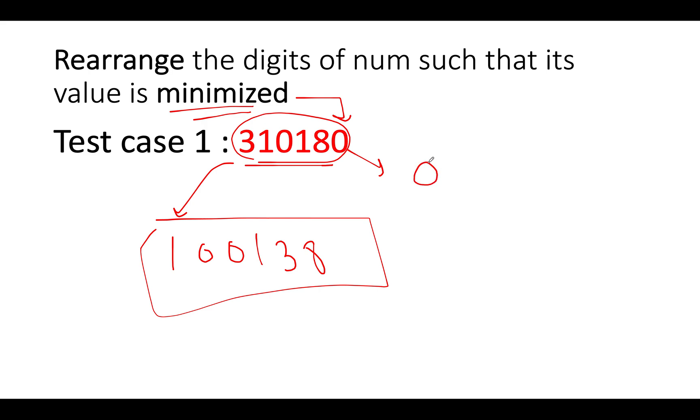So once we have sorted this up, the characters would be in the state 0, 0, 1, 1, 3, 8. So we have sorted all the characters that are present in the input number and we have stored it in a char array.